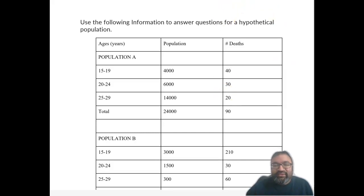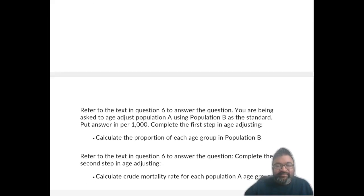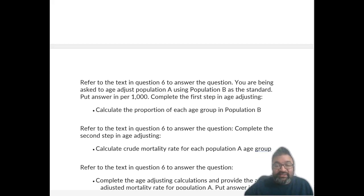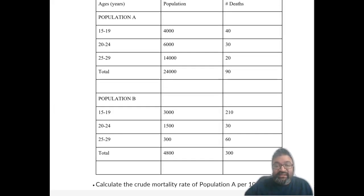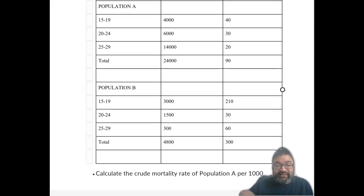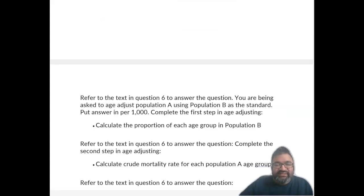and then what you're trying to do here is take a look at the proportion of each age group in population B. So when you're looking for the proportion of each age group in population B, what you're trying to do here is the ratio of 15 through 19 from right here. So for 15 through 19, you have 3,000 over 4,800. And then 20 to 24, you have 1,500 divided by 4,800, and that's the total. And then 25 to 29, you have 300 over 4,800.